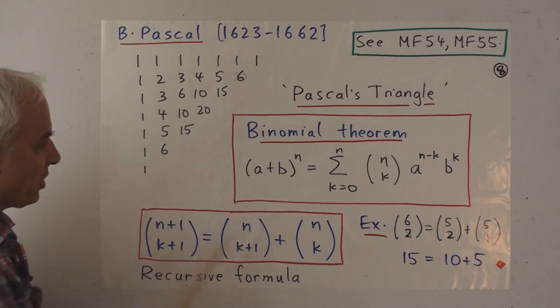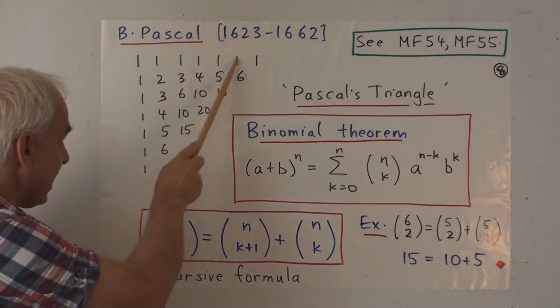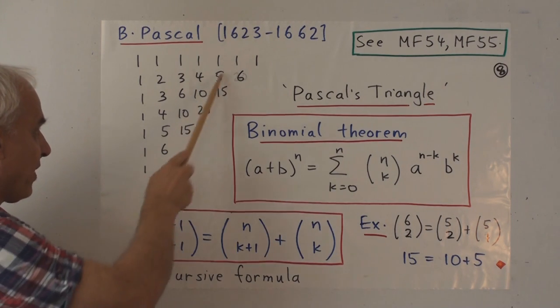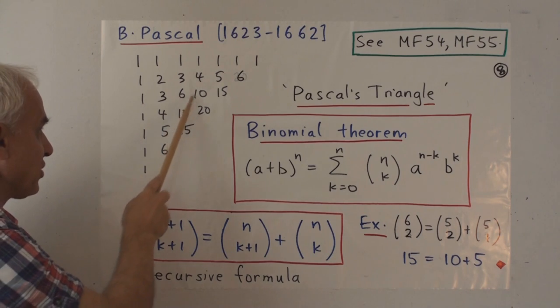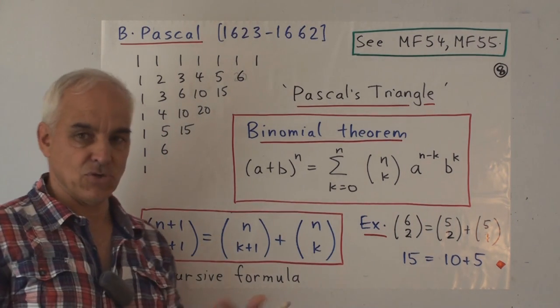In terms of these coefficients which are the n choose k's, they're appearing along these diagonals here. So when we expand a plus b to the fifth we have to look at these diagonals and here are the various coefficients. And here is binomial theorem as it's usually expressed.